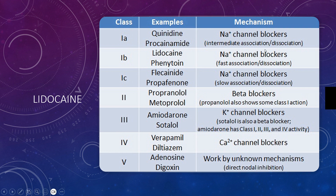So you see lidocaine there next to class 1B sodium channel blocker, and it can be used in cardiac arrest to replace amiodarone. With all the medication shortages, this may be where we have to utilize lidocaine instead of amiodarone. You'll see amiodarone is a class 3 anti-dysrhythmic, but it also has class 1, class 2, and class 4 properties — so it's got calcium channel blocker, sodium channel blocker, beta blocker, and potassium channel blocker properties. It's considered a non-selective cardiotoxin, if you will.